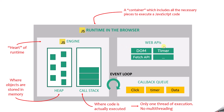Web APIs contain all the functions and APIs which can run asynchronously in the background. This web API is not a part of the JavaScript engine — instead, it is provided by the browser. So the web API provides us APIs which run asynchronously and can be used in our JavaScript code.